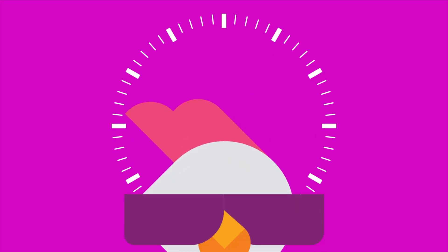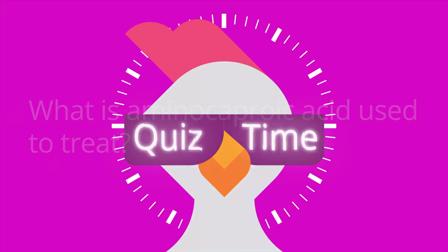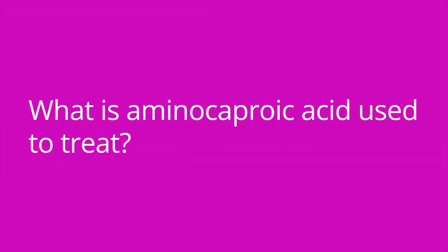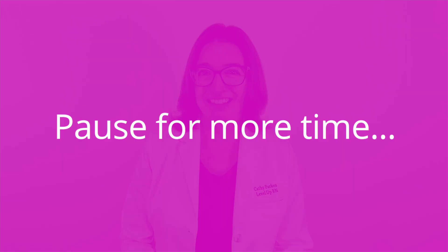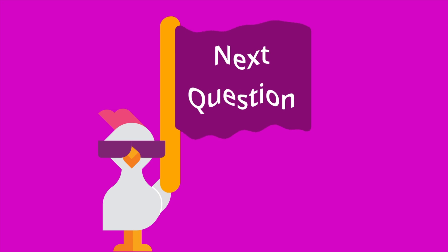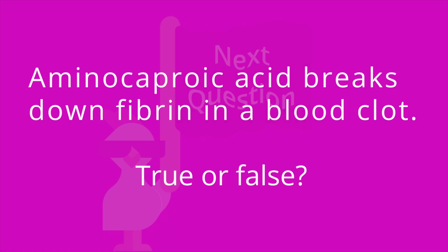It's quiz time, and I have three questions for you. Question number one: what is aminocaproic acid used to treat? The answer is hemorrhage or excessive bleeding.